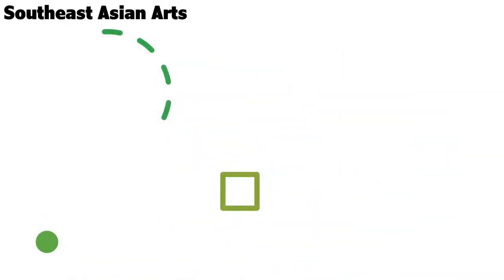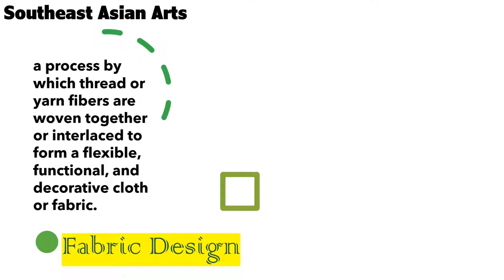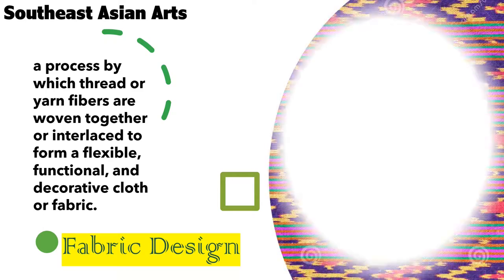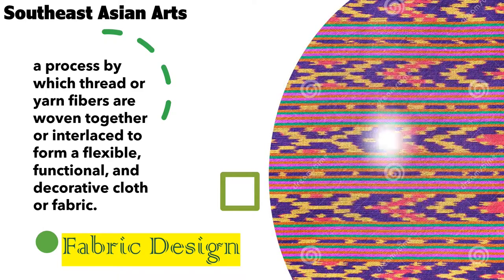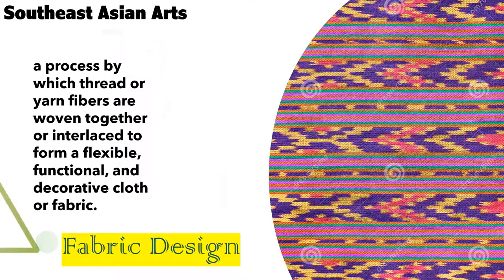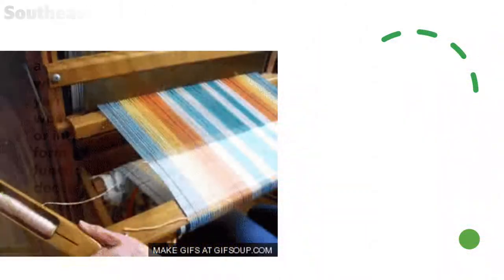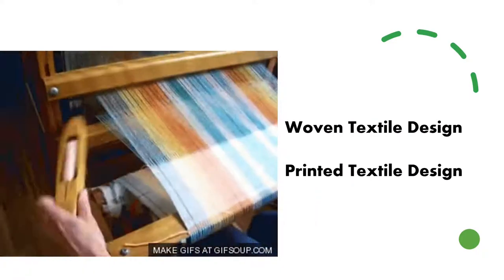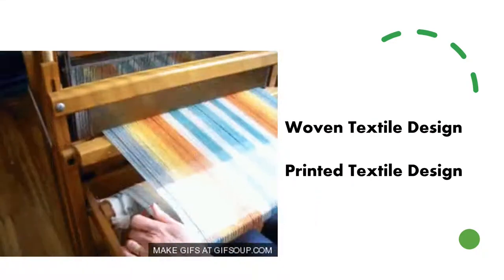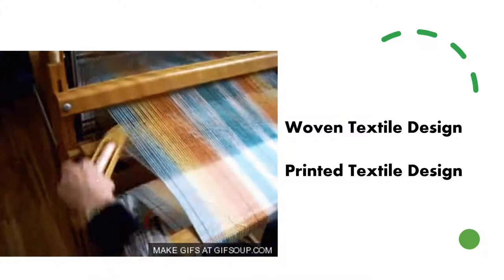Fabric Design is a process by which thread or yarn fibers are woven together or interlaced to form a flexible, functional, and decorative cloth or fabric. Fabrics are made by weaving or knitting. This is an example of how weaving is done. Aside from weaving, you can also do fabric designing through printing.